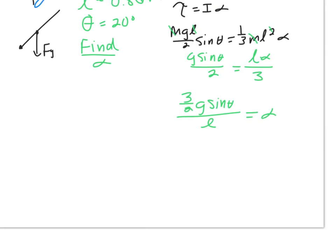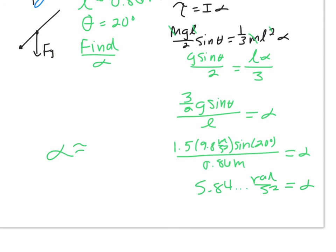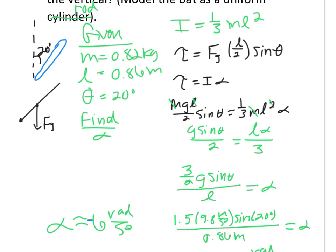Putting in the numbers, we have 3 halves is 1.5 times 9.8 meters per second squared, sine of 20 degrees divided by the length of the baseball bat, which was 0.86 meters equals alpha. And this equals 5.84 keeps on going radians per second squared. And with one sig fig, angular acceleration is about 6 radians per second squared. And I messed up because this is actually, if we look at the picture, this is causing a clockwise rotation. So this would be negative and then negative would have had to go in right here.